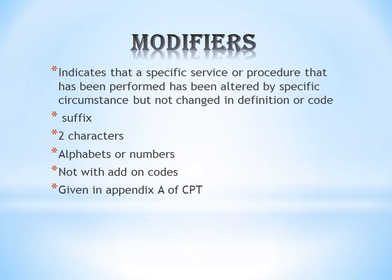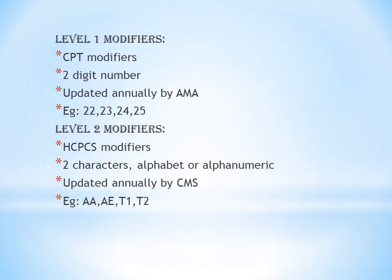Modifiers and their explanations: Modifiers are two types. Level 1 Modifiers and Level 2 Modifiers. Level 1 Modifiers are CPT Modifiers — two-digit numbers such as 22, 23, 24, 25. These are usually updated by the AMA, American Medical Association.